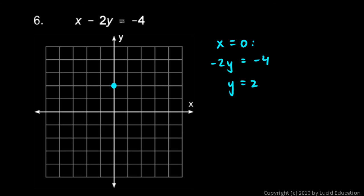And then I'll let y equals zero. And that just leaves me with x minus zero is negative four, or x is negative four. So there's my x-intercept, and that's all I need. Two points determine a line. And I'll draw it in.